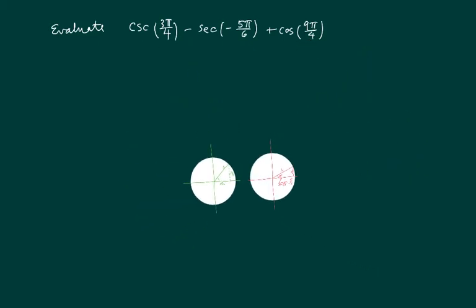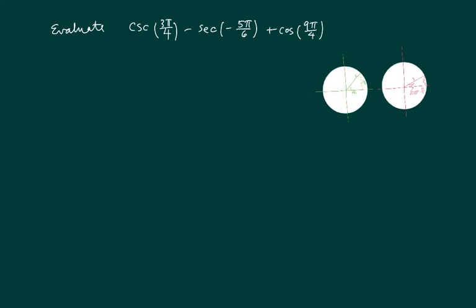Let's evaluate the last term here first because it's the easiest one to deal with. Here we have cosine of 9π over 4. Since cosine's periodicity is 2π, for every 2π it's going to repeat itself.